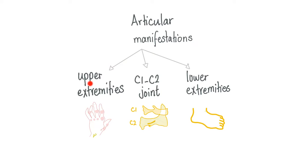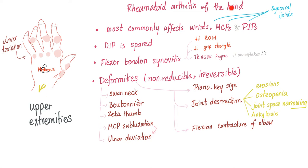Articular manifestations are upper extremities, lower extremities, and the atlanto-axial joint. Rheumatoid arthritis of the upper extremities — the hand most commonly affects the wrist, MCPs, and PIPs. DIP is spared, and this is different from osteo, because osteo involves the DIP and the PIP. Flexor tendon synovitis — because it's inflammatory — leads to decreased range of motion, decreased grip strength, and trigger fingers.